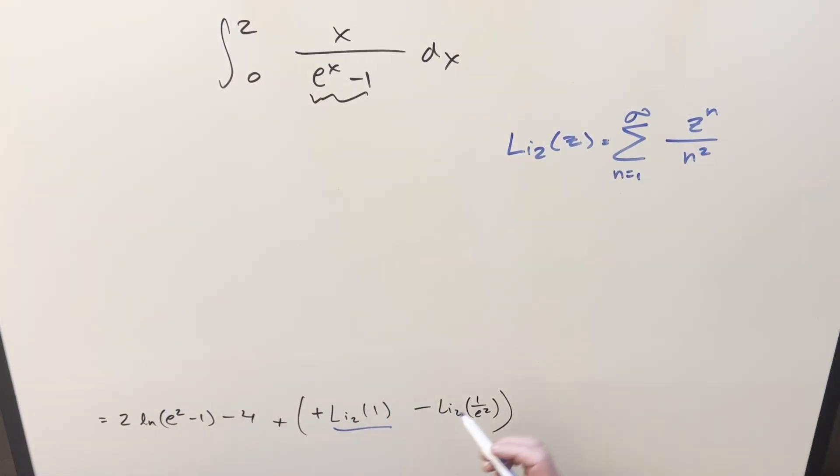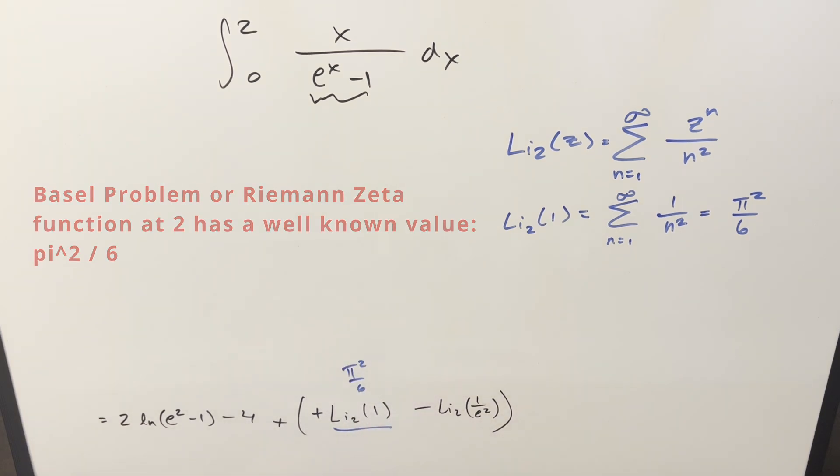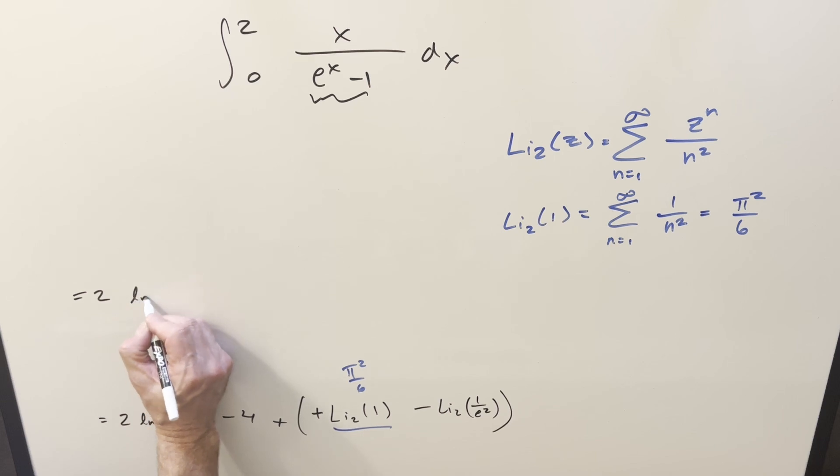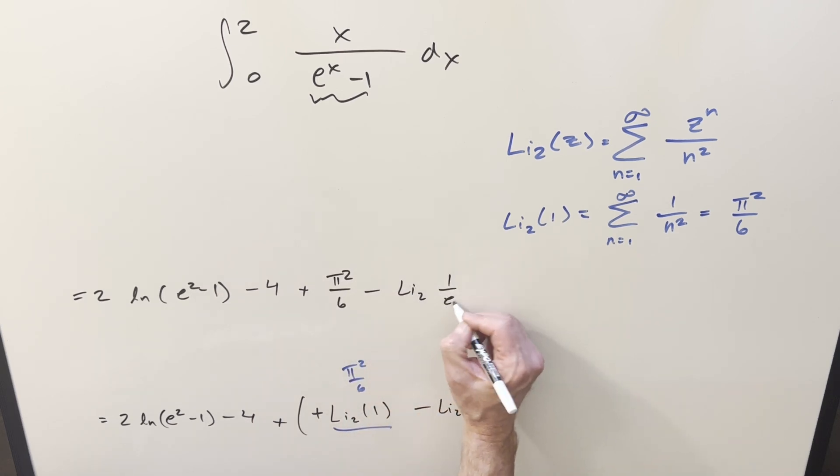Now for dilogarithm of 1, let's just go to our series definition for the dilogarithm. And I'm going to just take this and we'll plug in a 1 on it. So this is going to become the sum from 1 to infinity of 1 to the n. That's just 1 over n squared. But this thing's just the Basel problem or pi squared over 6. So we can plug in pi squared over 6 down here. And so putting it all together for my final solution, we have just 2 natural log e squared minus 1 minus 4 plus pi squared over 6 minus dilogarithm 1 over e squared.